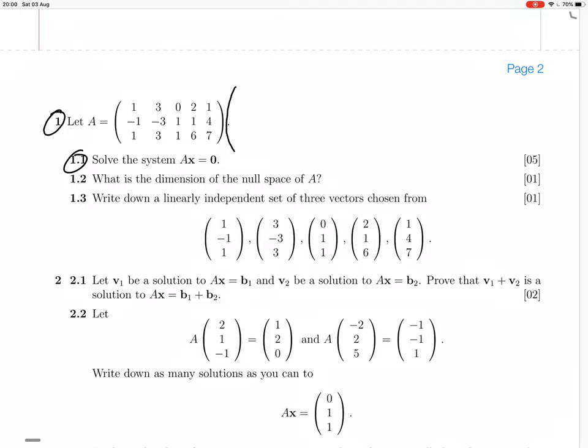The vector x will have 5 rows because there are 5 columns in A, and it equals the zero vector with 3 rows. We'll solve this system using Gaussian reduction. Let's go ahead and do that.